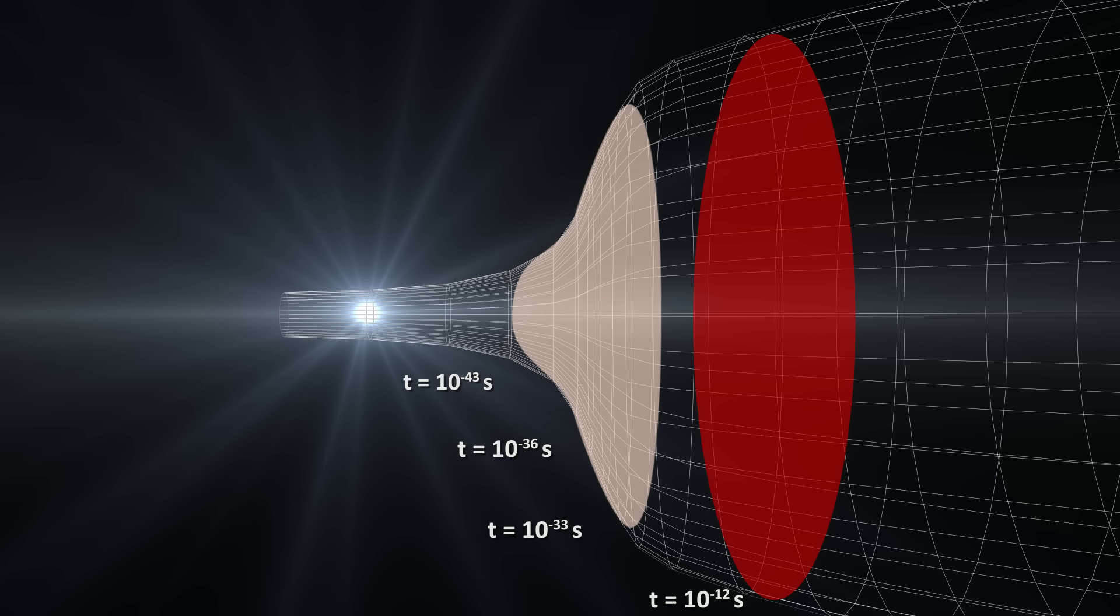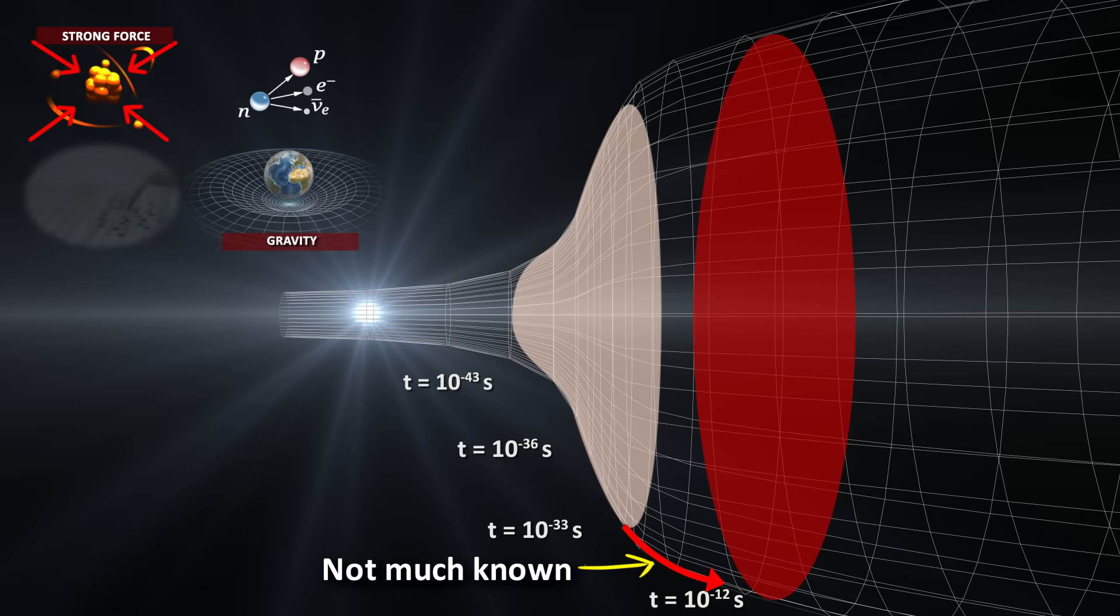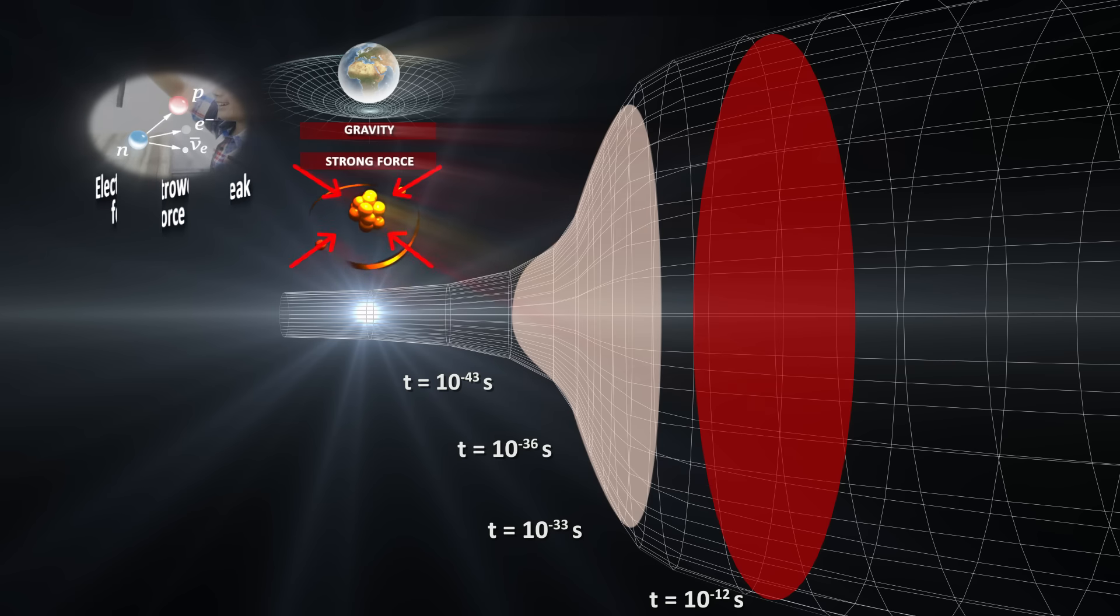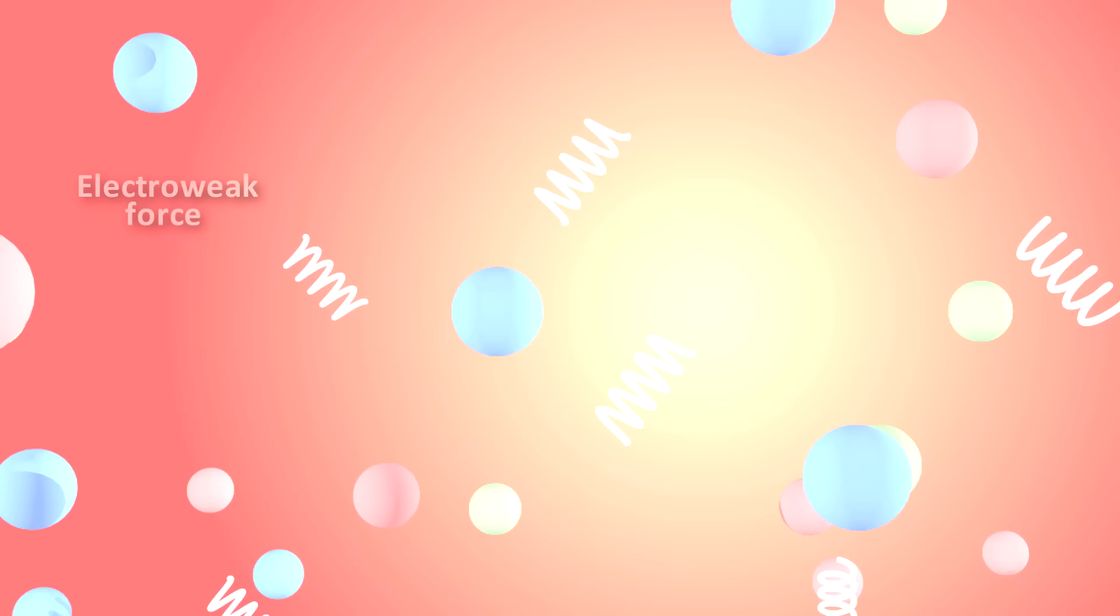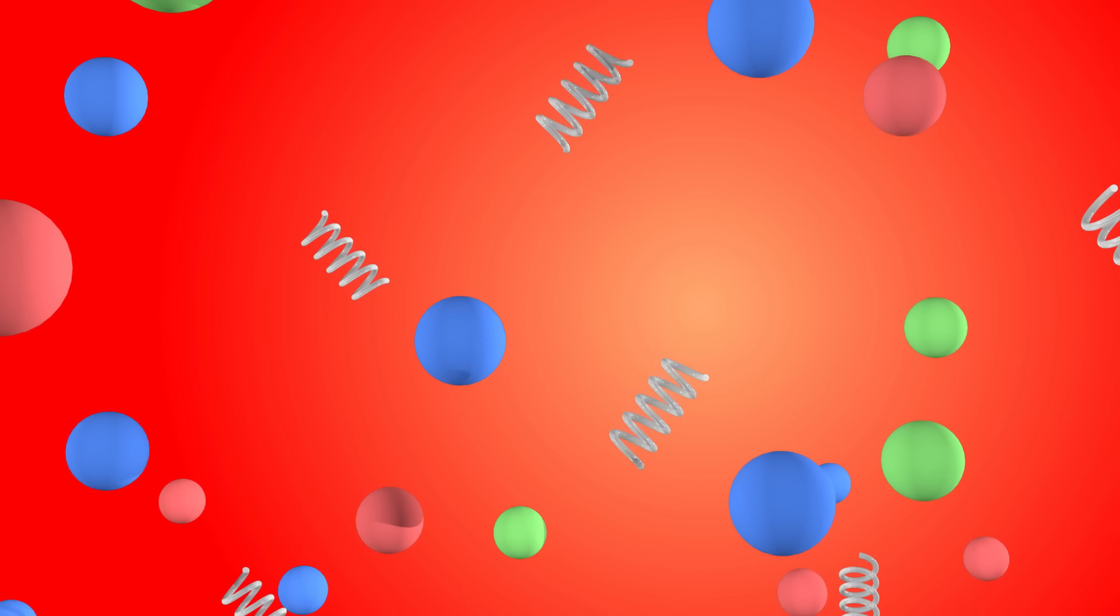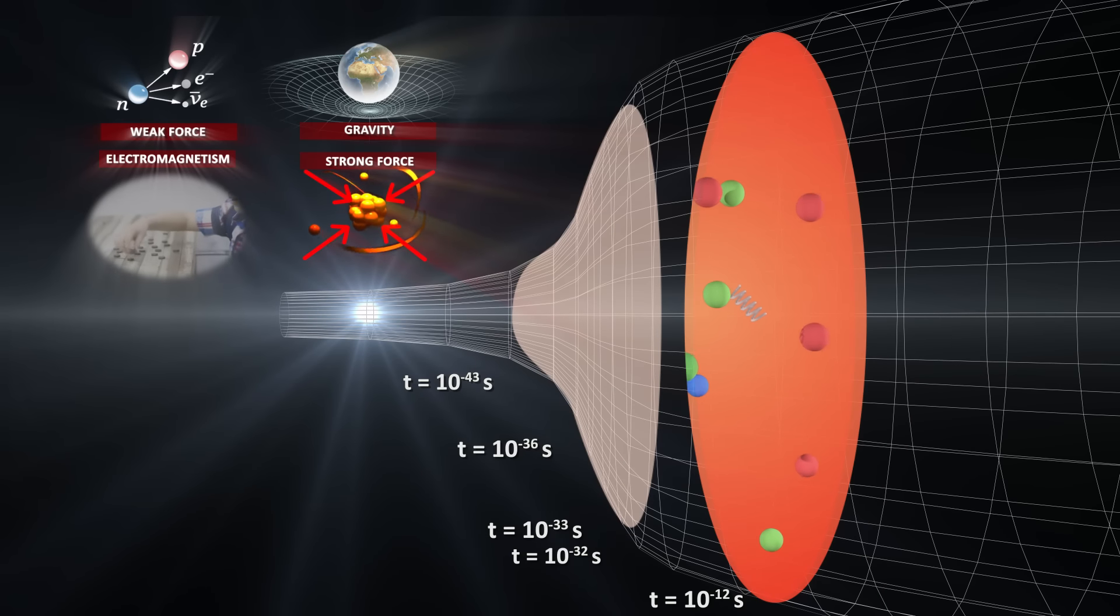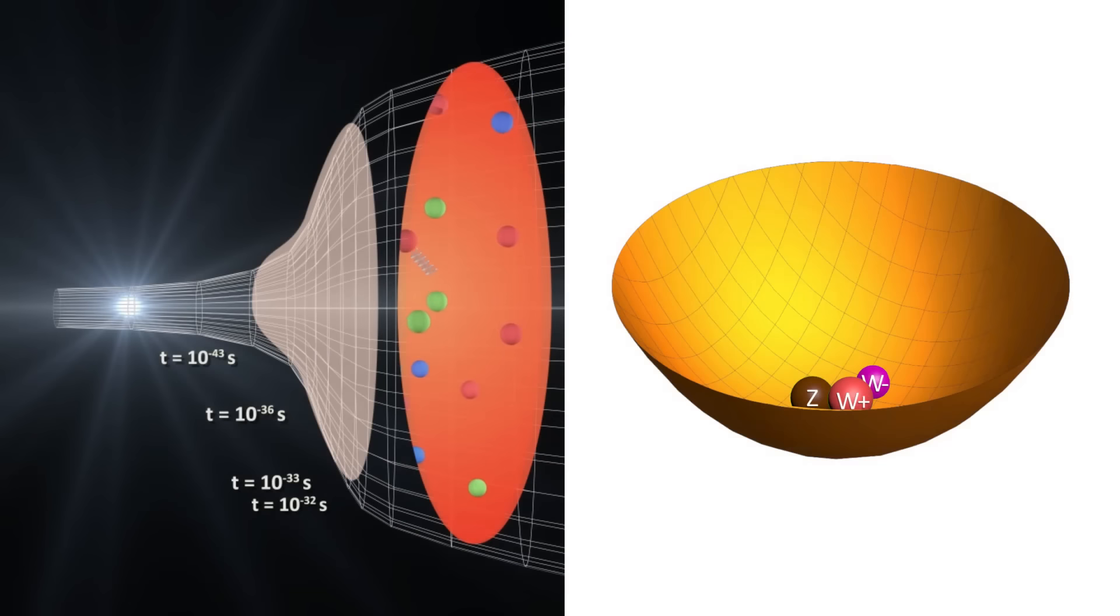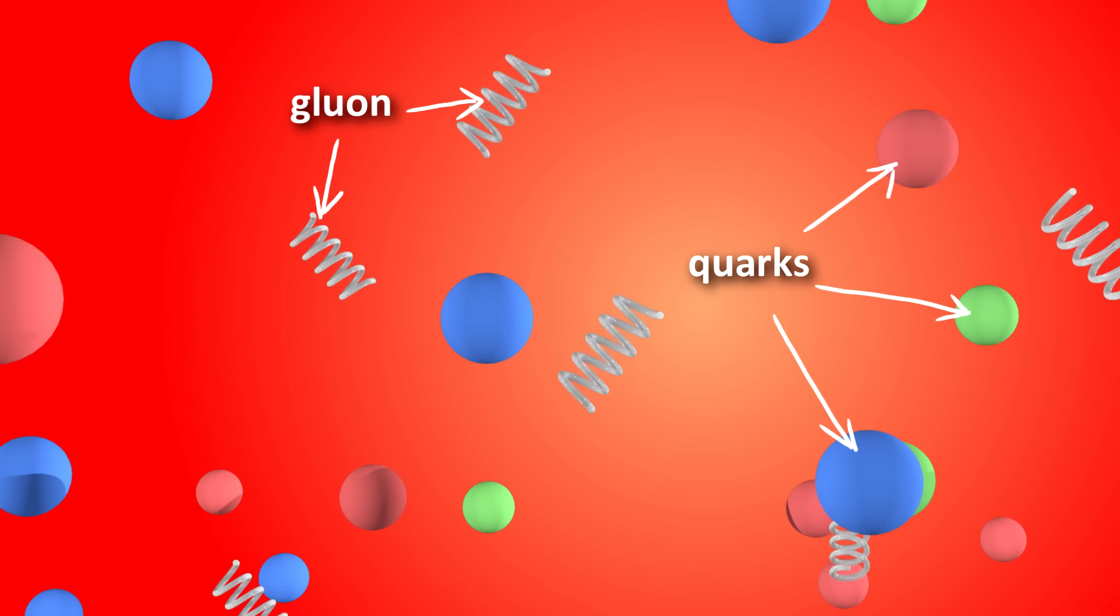We don't know much about what happened during the period after inflation, from about 10 to the negative 33 seconds to 10 to the negative 12 seconds. In terms of the forces, gravity is thought to have separated from the unified force shortly after the Planck epoch at 10 to the negative 43 seconds, and later the strong force is thought to have separated at around the time of inflation, 10 to the negative 32 seconds. But from 10 to the negative 32 seconds to 10 to the negative 12 seconds, the electromagnetic and weak forces were still united as the electroweak force. At this point, the laws of the standard model of particle physics tells us the universe probably consisted of quarks and gluons existing together in a quark-gluon plasma, along with some other fundamental particles. But importantly, at this point all these fundamental particles were massless, because the Higgs field was massless at this point. In other words, it had not gained a non-zero potential that allows fundamental particles to gain mass by interacting with it.